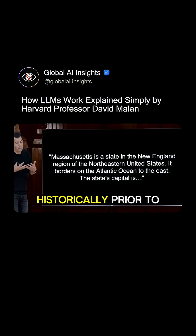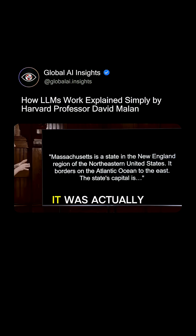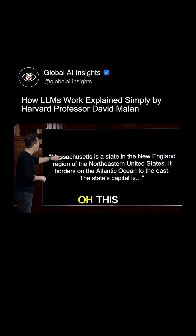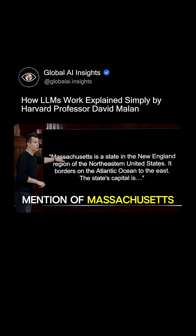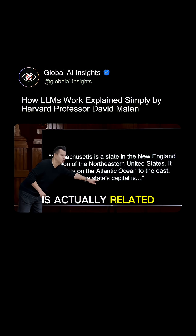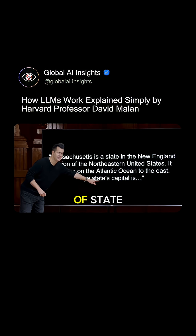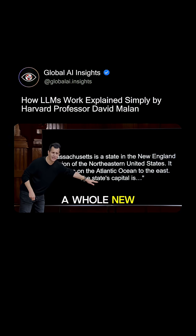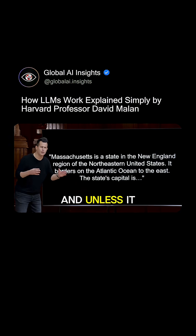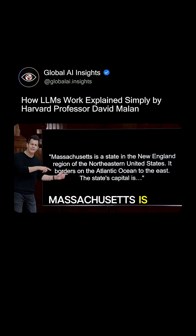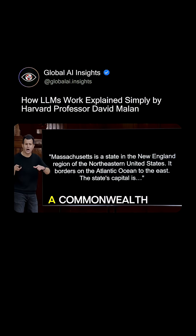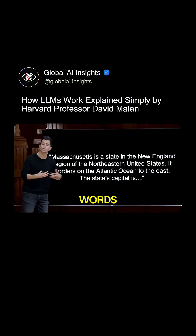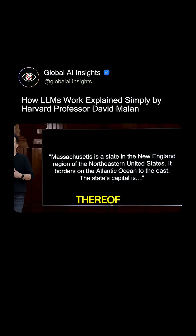Well, historically, prior to around 2017, it was actually pretty hard for machines to learn that this mention of Massachusetts is actually related to this mention of state. Why? Because they're pretty far apart — this is in a whole new sentence. And unless the machine already knows what Massachusetts is — and technically it's a commonwealth — it might not give much attention or much weight to the relationship between those two words.